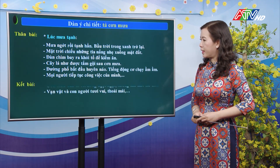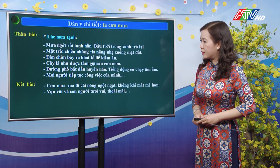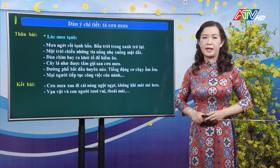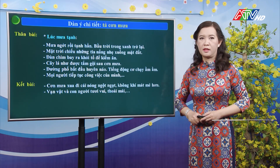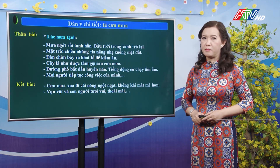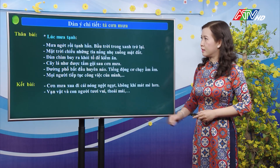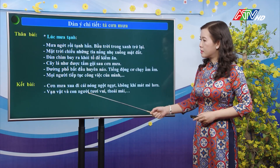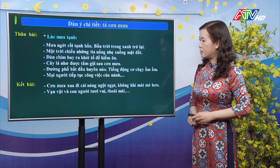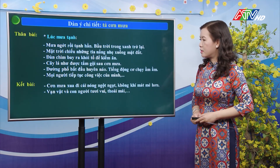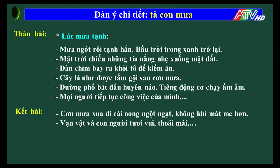Kết bài: con sẽ nêu cảm nghĩ về cảnh cơn mưa mình đã tả. Ví dụ: cơn mưa xua tan đi cái nóng ngột ngạt, không khí mát mẻ hơn, vạn vật và con người tươi vui, thoải mái, v.v.